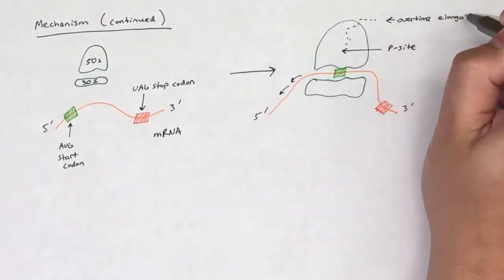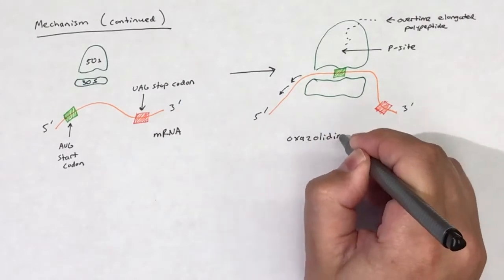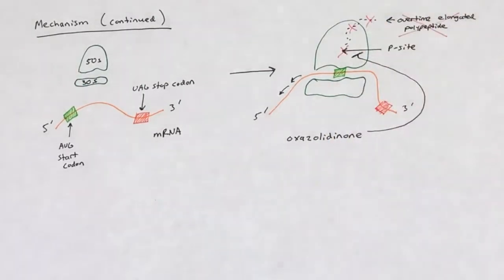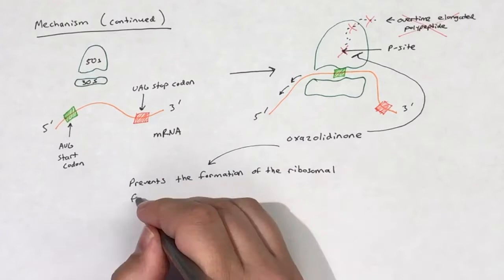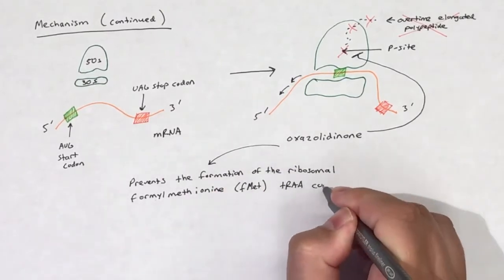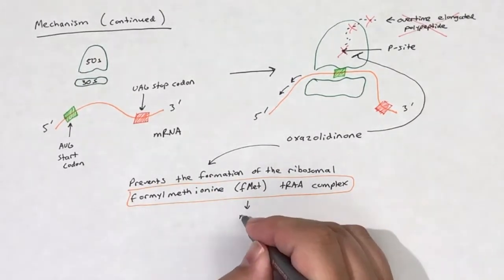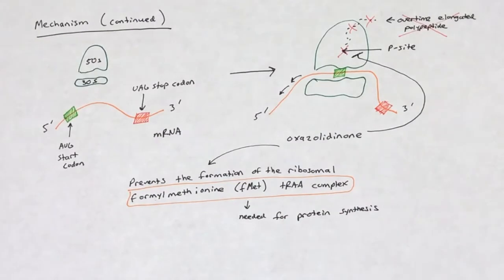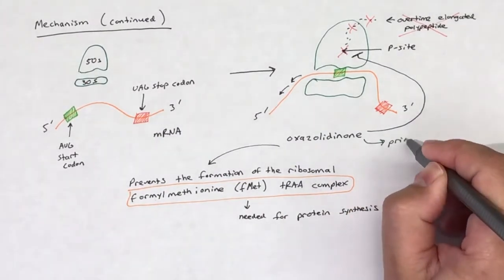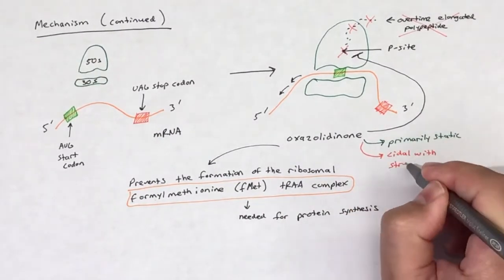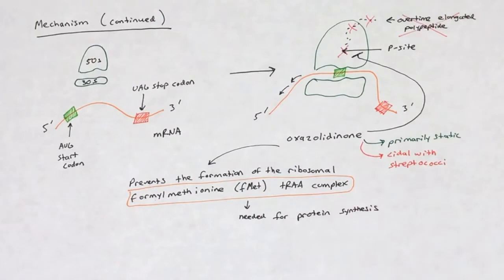You'll recall that AUG is the start codon in protein synthesis. Without the proper formation of the ribosomal F-MET tRNA complex, protein synthesis cannot be initiated. Oxazolidinones are primarily bacteriostatic. However, oxazolidinones are bactericidal against streptococci.